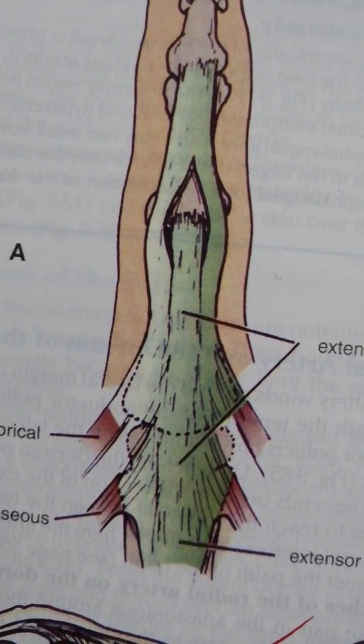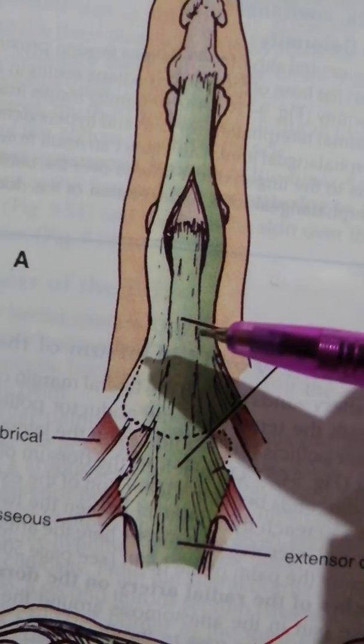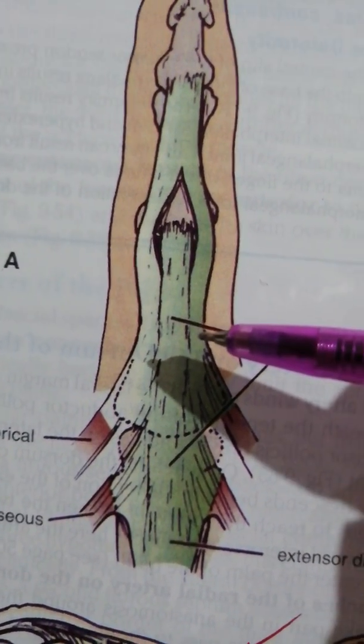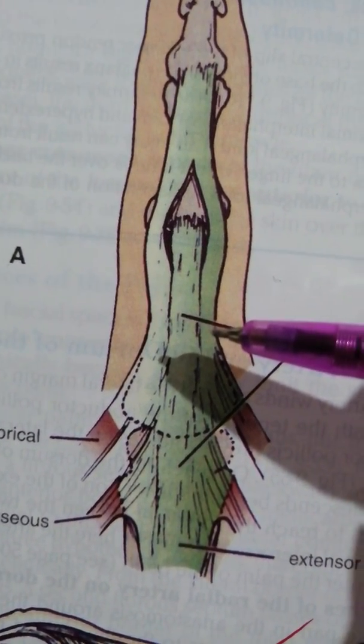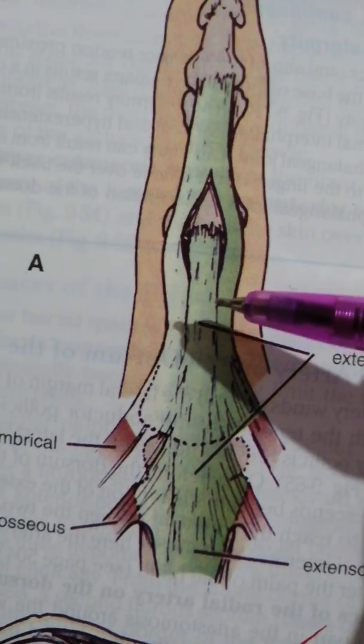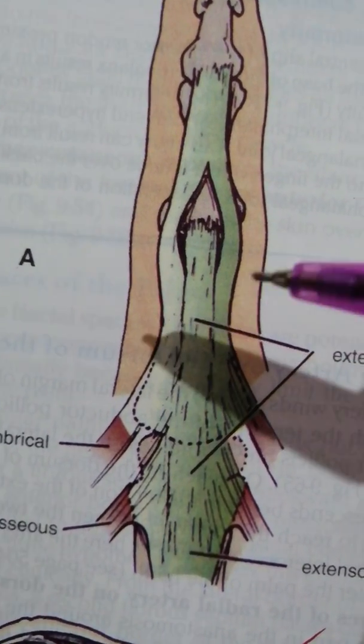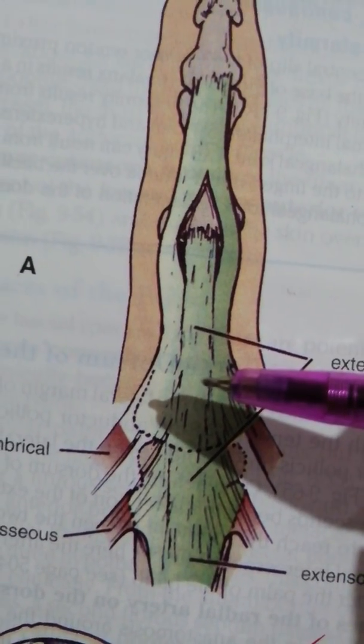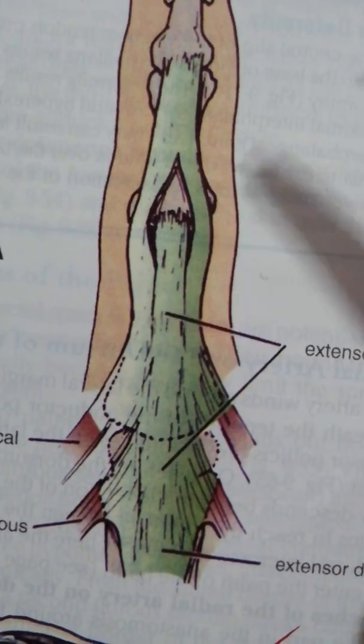And third very important point is that we have four extensor expansions on the second, third, fourth and fifth digits. And in each one the triangular aponeurosis is related to the relevant tendon of the extensor digitorum.